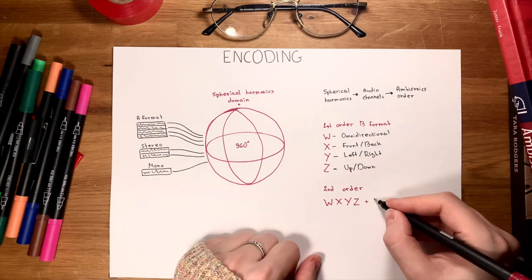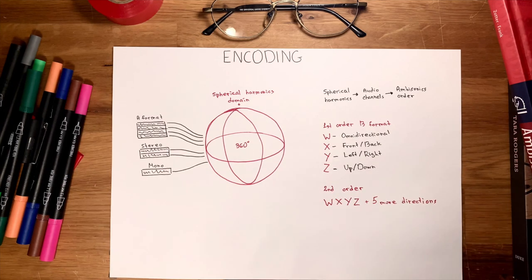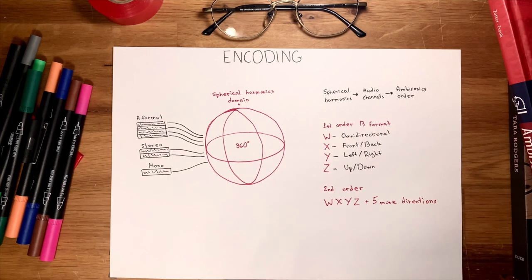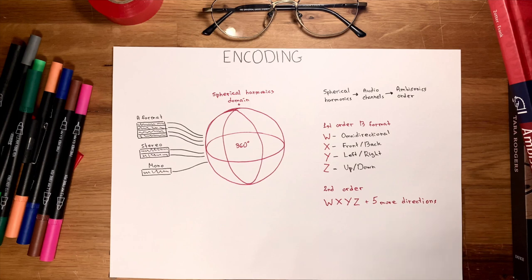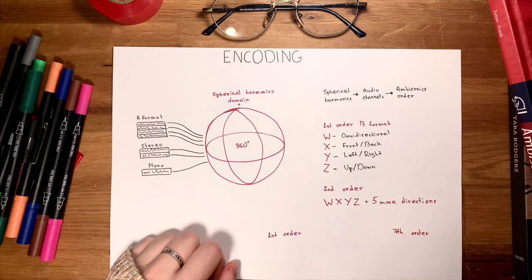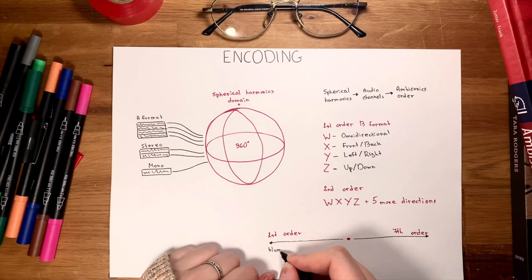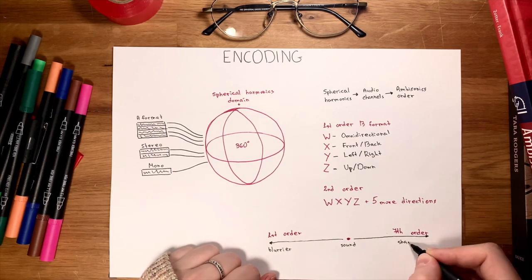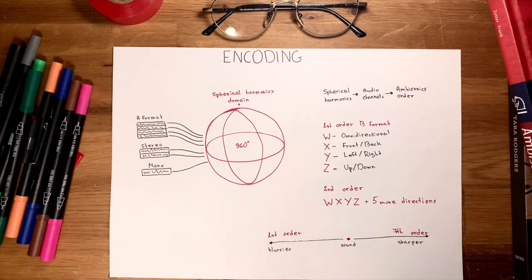Second order consists of nine spherical harmonics and nine audio channels: W, X, Y, Z, plus five more, meaning more spatial directions are covered. That means sound source localization will be much sharper in seventh order than in first order.